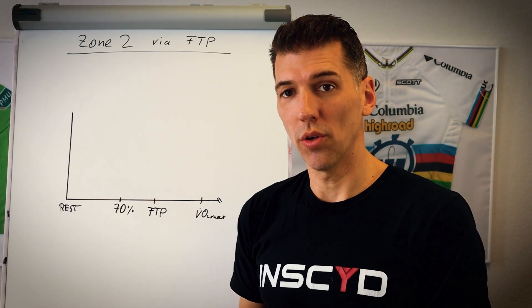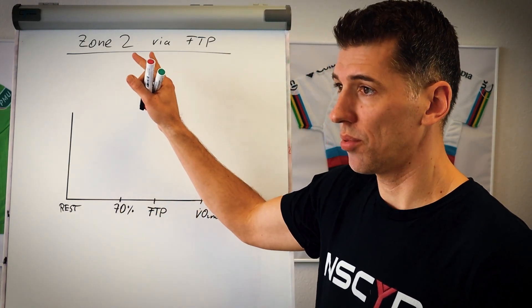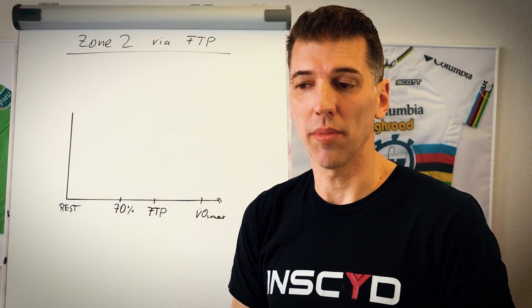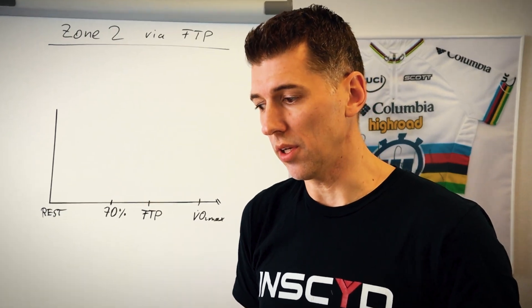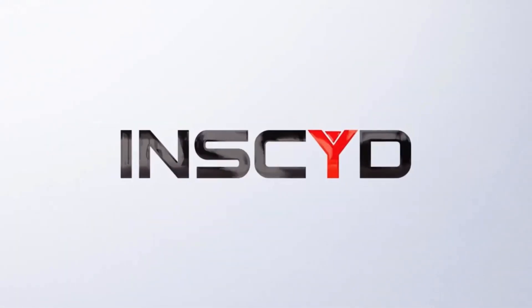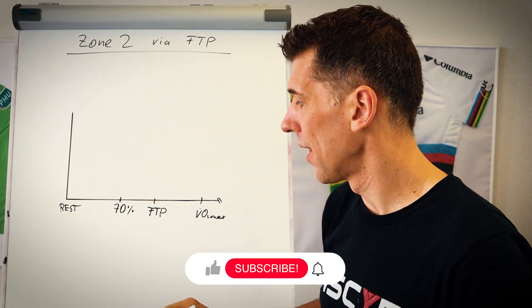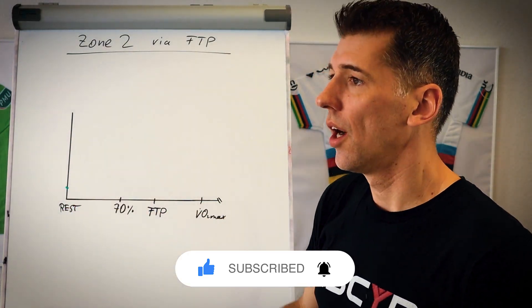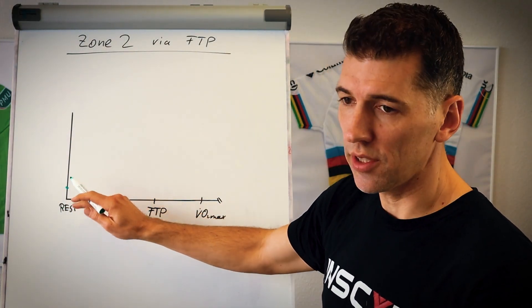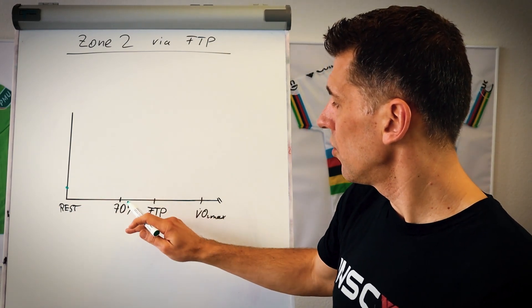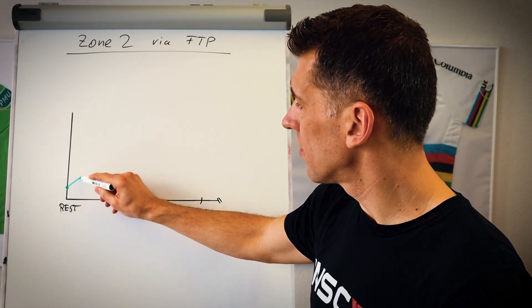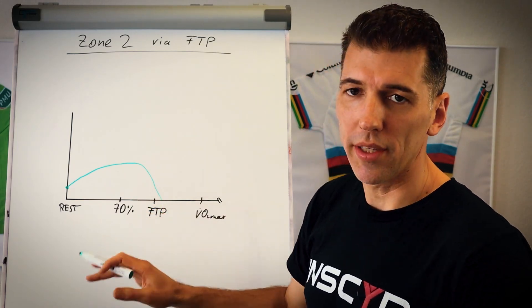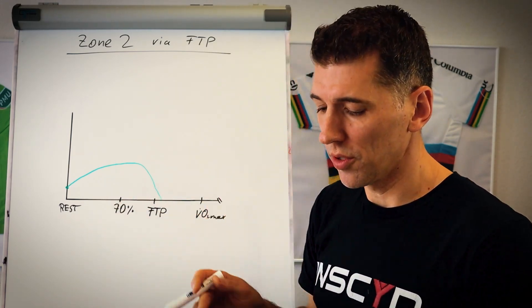What you really want for a precise zone 2 training intensity is an idea about the fat and carbohydrate combustion rates, and this is where it becomes tricky. At rest, you have some fat combustion. When you increase intensity from rest through zone 2 to FTP, fat combustion rates first go up and then they go down, and somewhere in the range of FTP they go basically to zero.